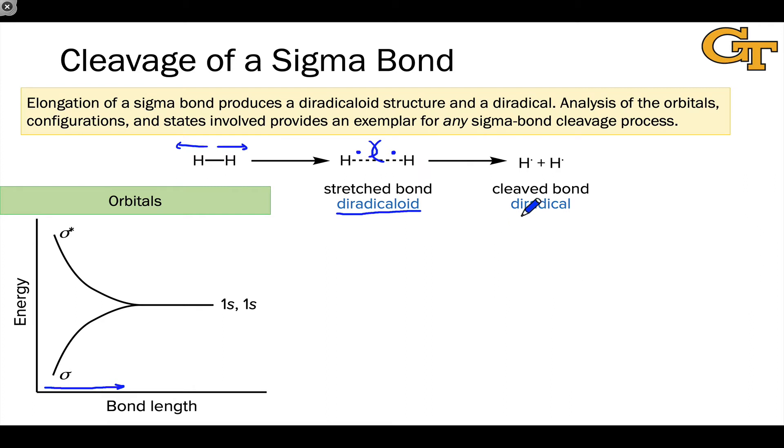At the point where the bond is cleaved, well, now we're dealing with a classical diradical with the two unpaired electrons acting more or less completely independently. For example, the singlet and triplet states become equal in energy and the electrons kind of don't know the other one is there. The evolutions of the orbitals follow fairly intuitively from this model.